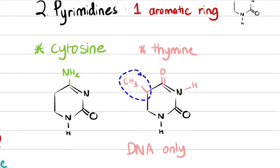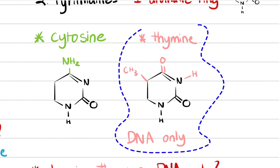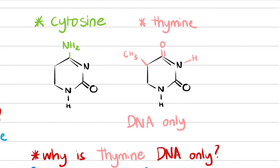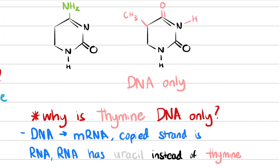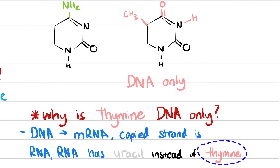This is very important and will be interesting later on. I want to highlight the methyl group that is attached here. We also want to highlight the fact that thymine is only used in DNA. Why is that? When DNA is copied into mRNA, RNA does not have thymine — thymine is replaced by uracil in RNA.